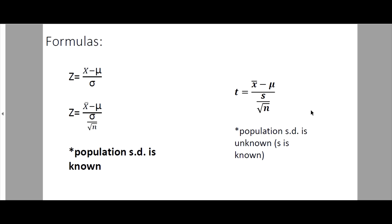What are the formulas? For Z, this is used when the population standard deviation is known. But if it is unknown, then we use the T formula — that is, the sample standard deviation is known and our sample size n is less than 30.